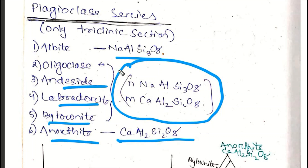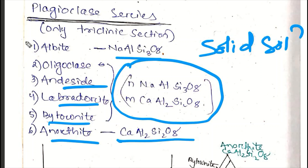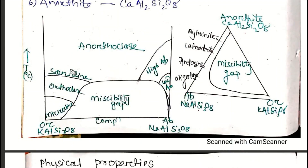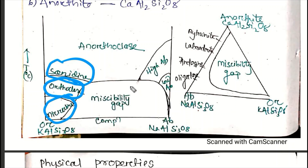The plagioclase series forms a solid solution series. What is a solid solution series? The chemical formula changes gradually — Na and Ca replace each other gradually across the series. The triangular diagram is used to represent the feldspar compositions, with apices at Anorthite, Albite, and Orthoclase.